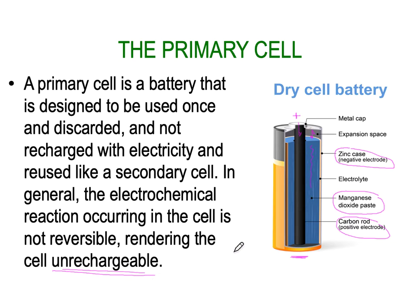It's very important that once you've used a primary cell, you dispose of it appropriately. You cannot recharge it and it's dangerous to do so — you'll find the chemical will leak out, and in the worst case the cell can catch fire and overheat.